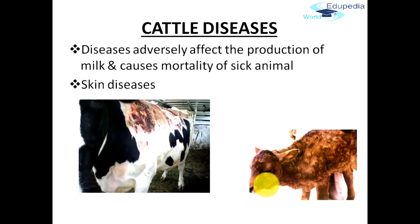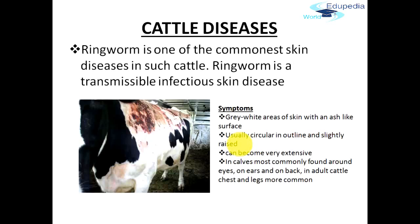Basically they suffer from skin diseases. Let's talk more about the skin disease. This is a skin disease which is called ringworm. Ringworm is one of the commonest skin diseases that cattle generally suffer from, and this disease is a transmissible infectious skin disease which is generally caused by fungi. General symptoms of this disease are grey-white areas of skin with an ash-like surface, so you can see it clearly as if it is burnt.